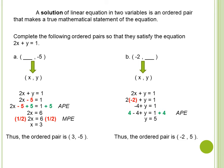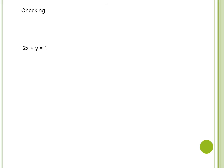So the solutions of the equation 2x plus y equals 1 are (3, -5) and (-2, 5). These are just two of the solutions. To find out if the answers are correct, let's do the checking.